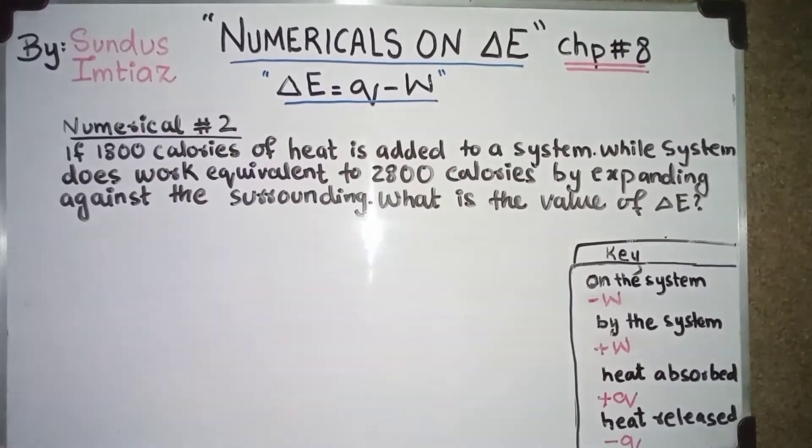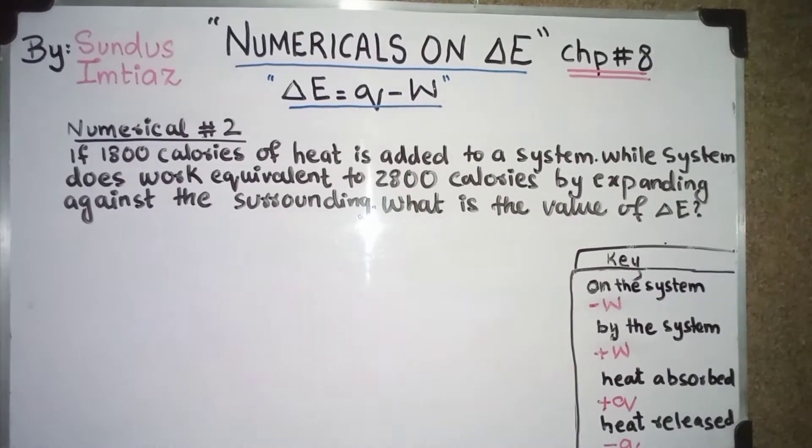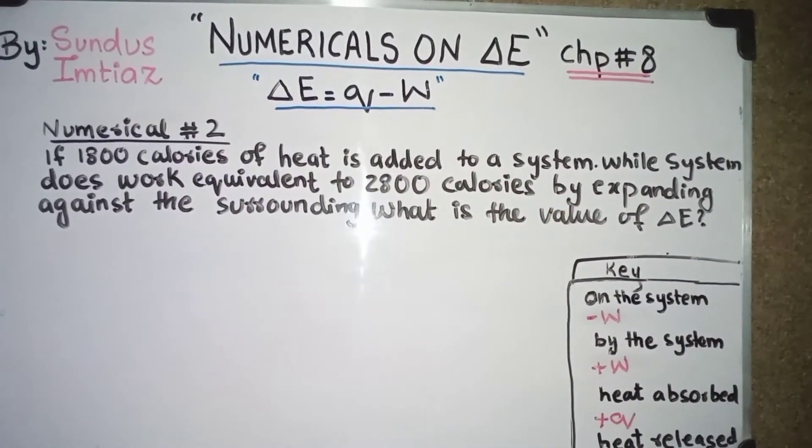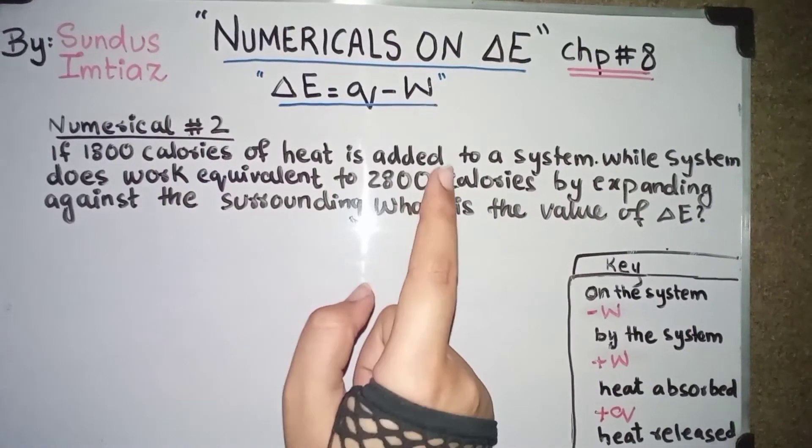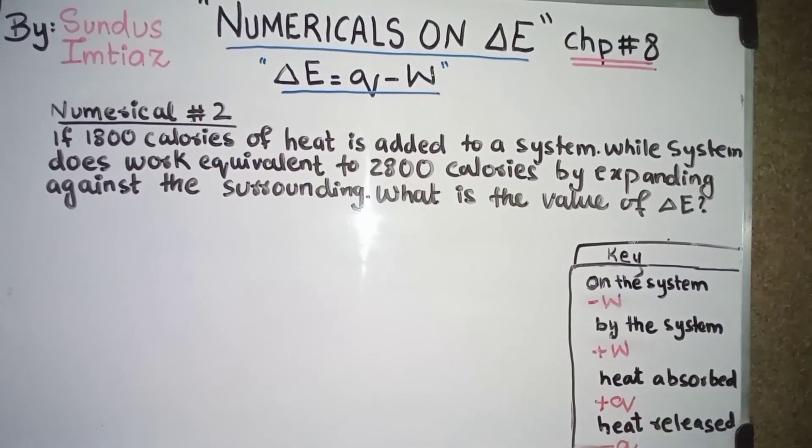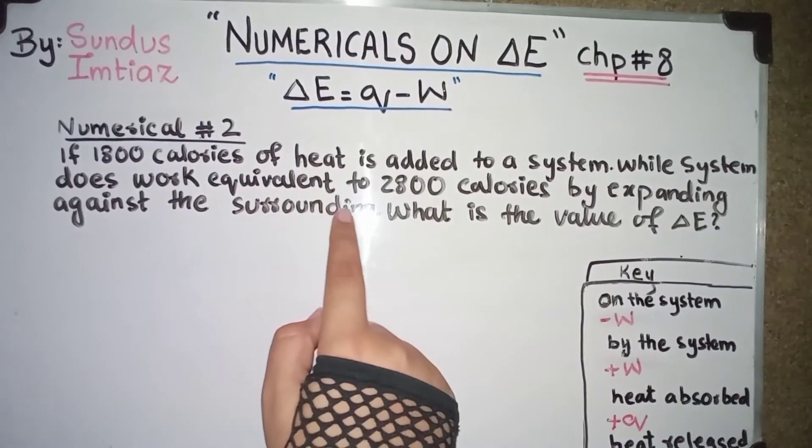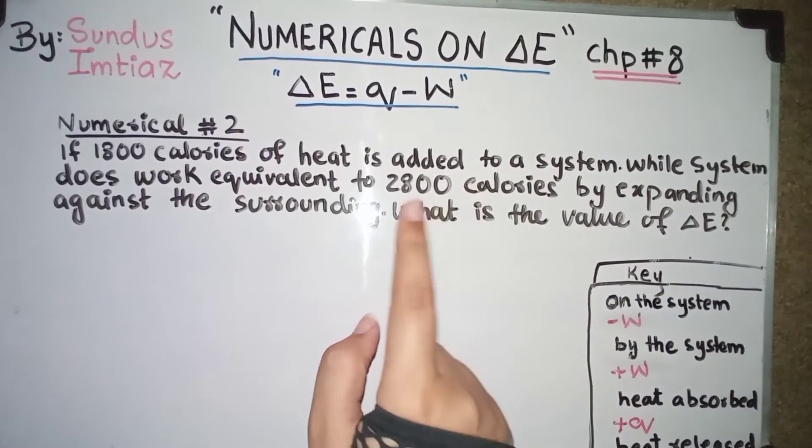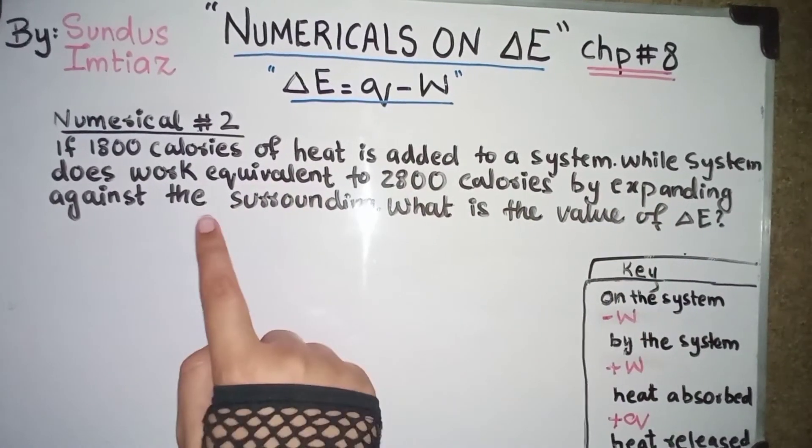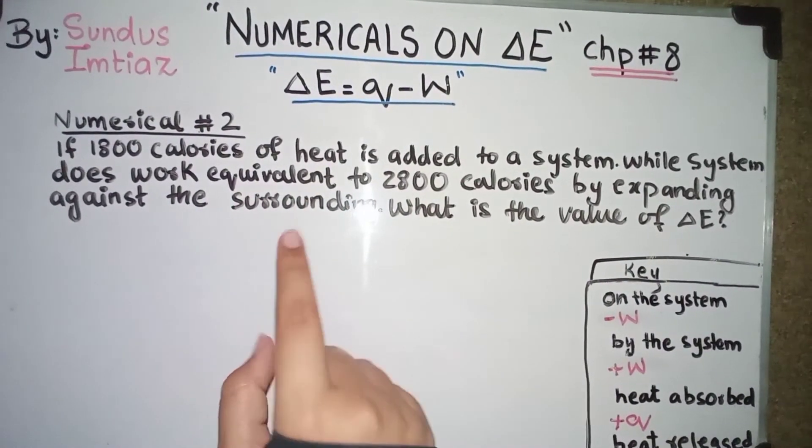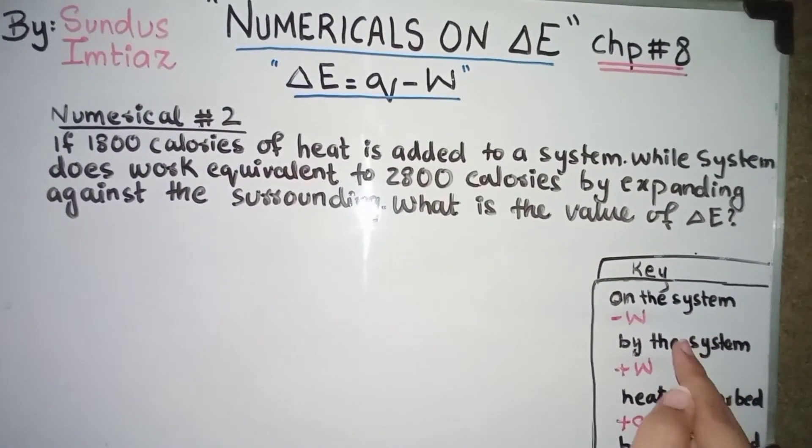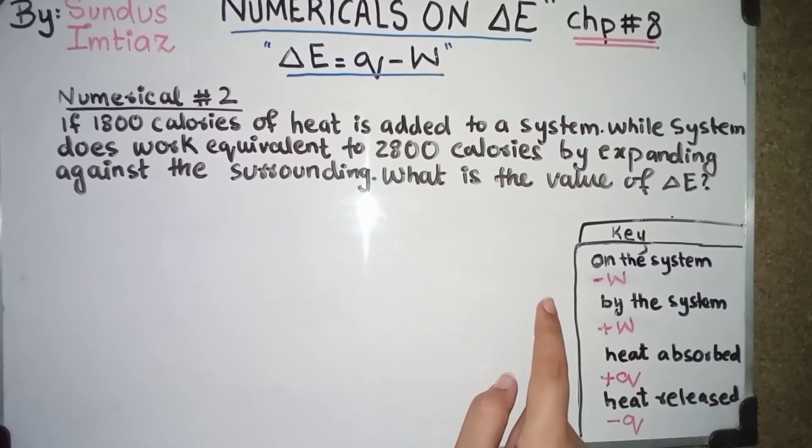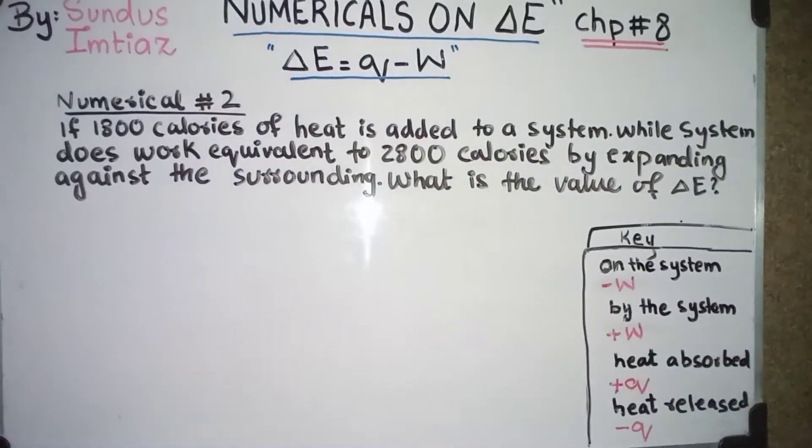Okay students. So this is the numerical number 2. It has been written that if 1800 calories of heat is added to a system. You see that heat is added. It means heat is absorbed. So heat absorbed will be positive. While system does work equivalent to 2800 calories by expanding against the surrounding. So they are telling system does work. System does work means system itself is doing work. So work is done by the system. So it will be positive. So work will be positive, Q will be positive.